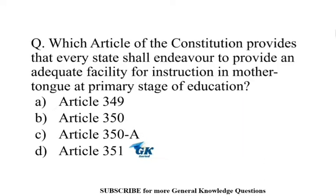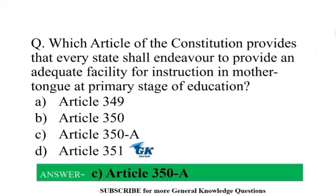First question: Which article of the Constitution provides that every state shall endeavour to provide adequate facility for instruction in the mother tongue at the primary stage of education? Article 350A.